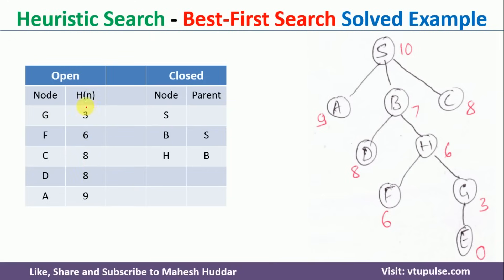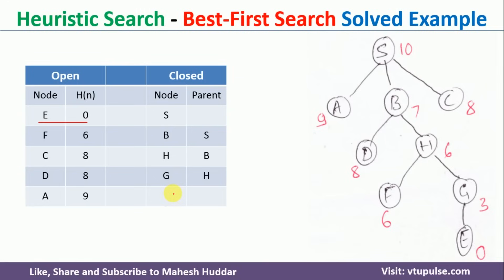We select G as the node with the minimum heuristic value and place it on the closed list. Expanding G gives E, which is added to the open list. After rearranging, E comes at the first position. E is selected and placed on the closed list. E is the goal node, so we stop our iteration. This is the final iteration because we have reached the goal state.